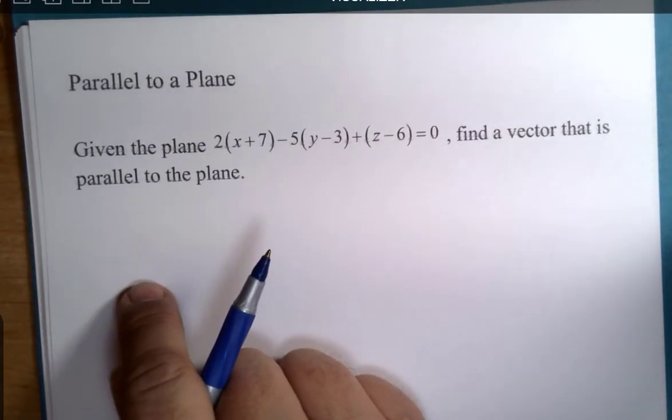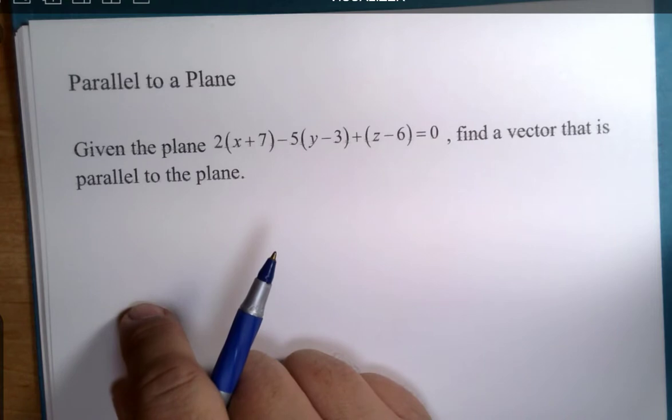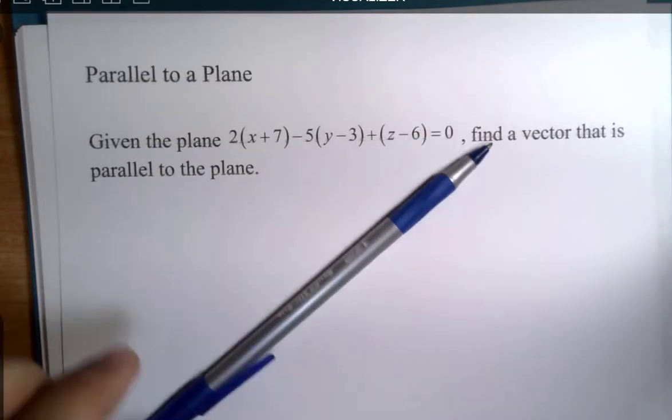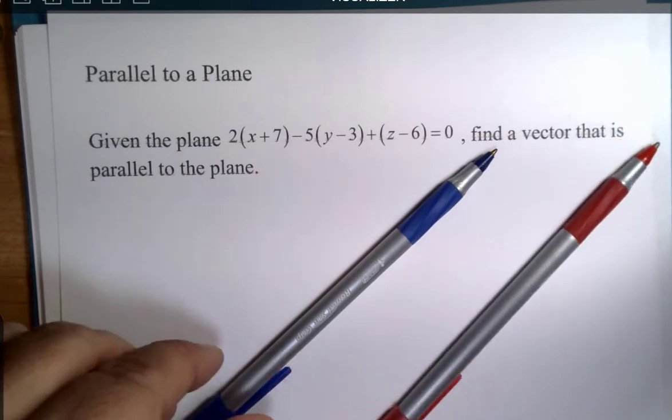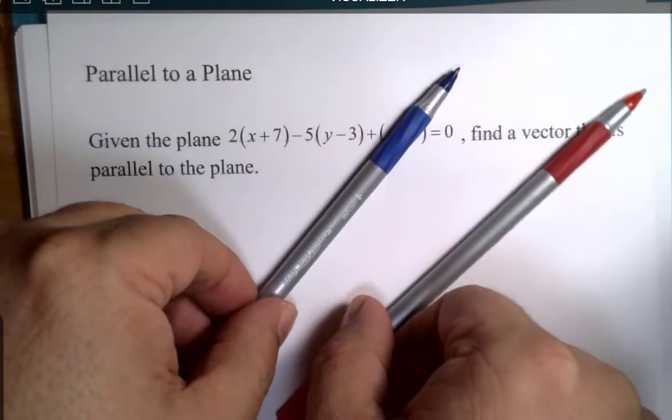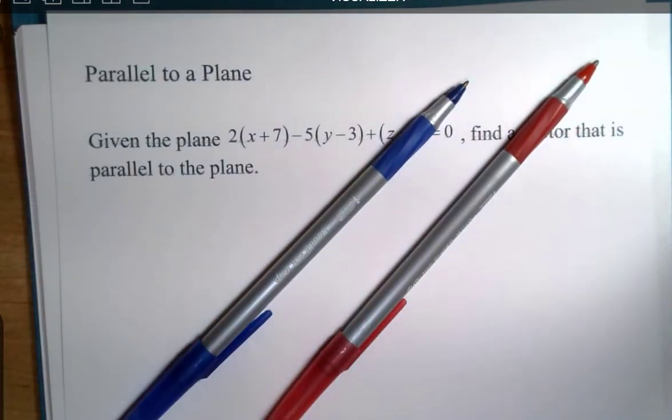Remember, vectors have direction and magnitude, not necessarily location, so you put two vectors that are the same direction and the same length, and those are called the same vector. So when we talk about parallel, we're basically meaning a vector that is in the same direction as a vector on the plane itself.